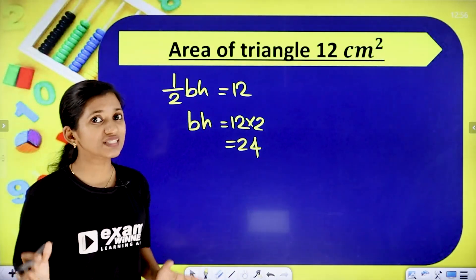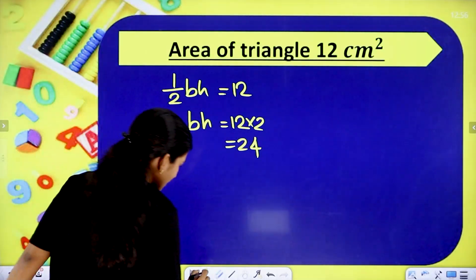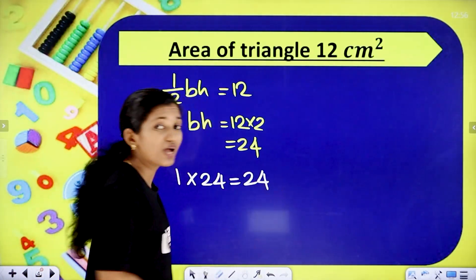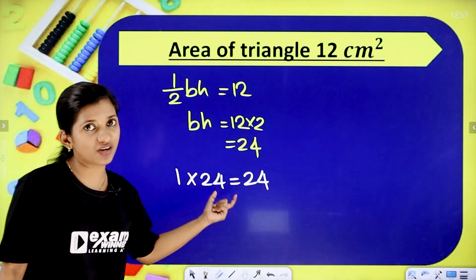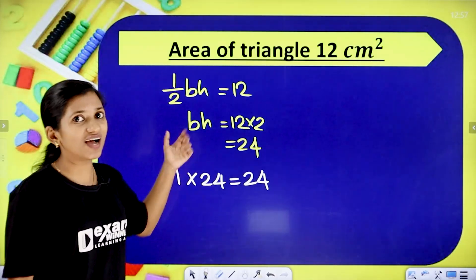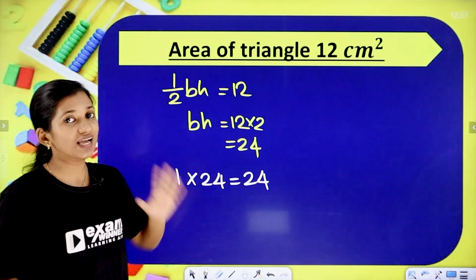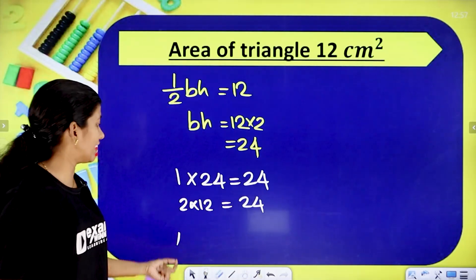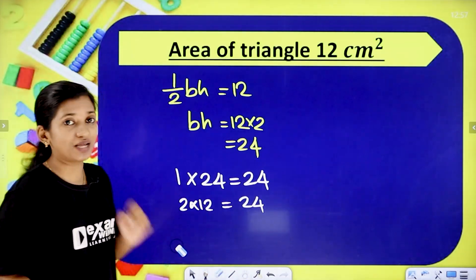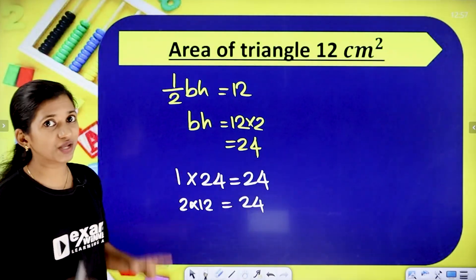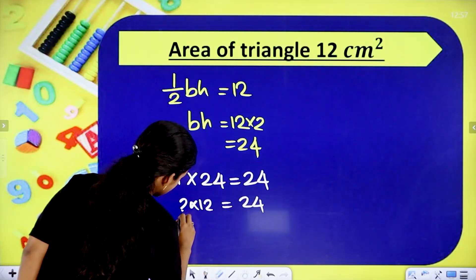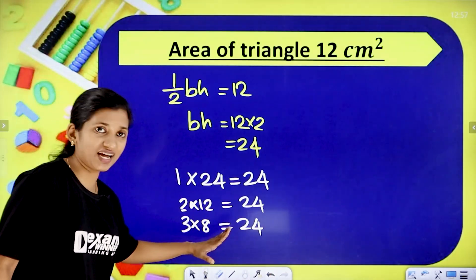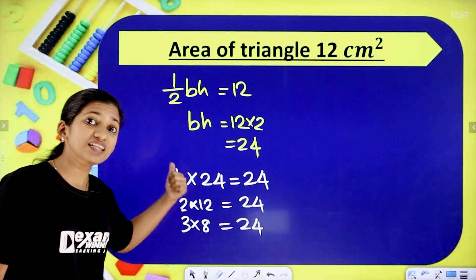Let's look at the different factor pairs that give us 24. First: 1 into 24 equals 24, so base 1 and height 24. Then base 24 and height 1. Next row: 2 into 12 equals 24, so base 2 and height 12, or base 12 and height 2. Next row: 3 into 8 equals 24, so base 3 and height 8, or base 8 and height 3.